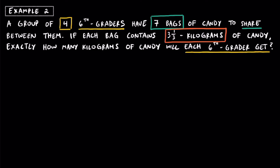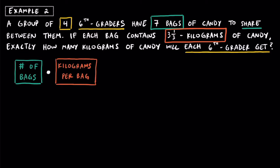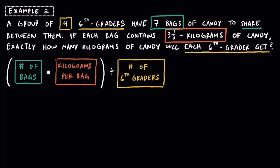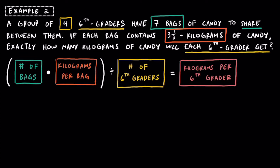Let me help you set up a verbal model. If we take the total number of bags of candy and multiply that by the amount of kilograms per bag, this tells us the total kilograms of candy. After multiplying those two values together to find the total kilograms of candy, we can then divide that by the total number of sixth graders sharing. This equals the total amount of kilograms each sixth grader would get. So: seven bags, multiplied by three and one third kilograms per bag, divided by four students.